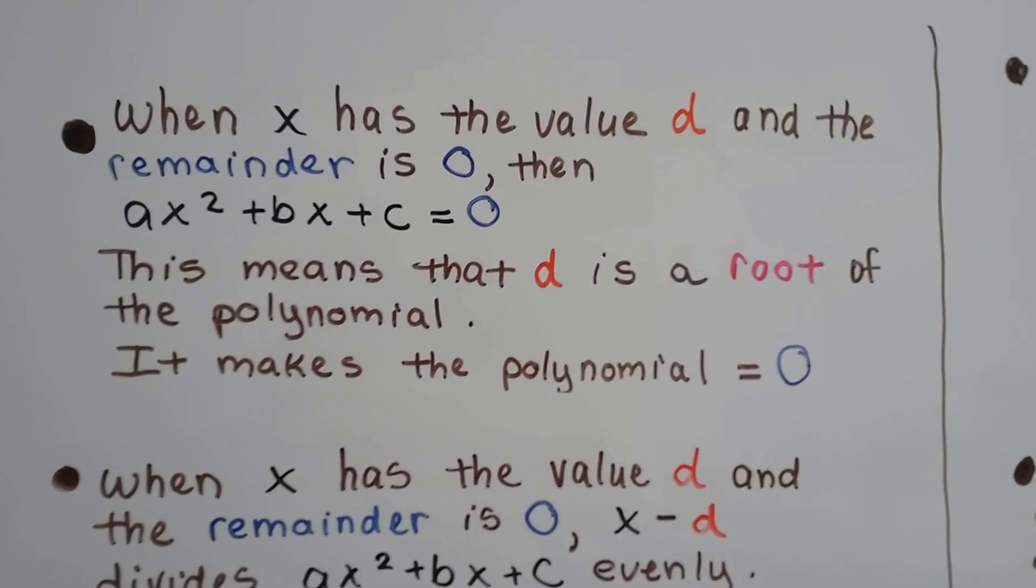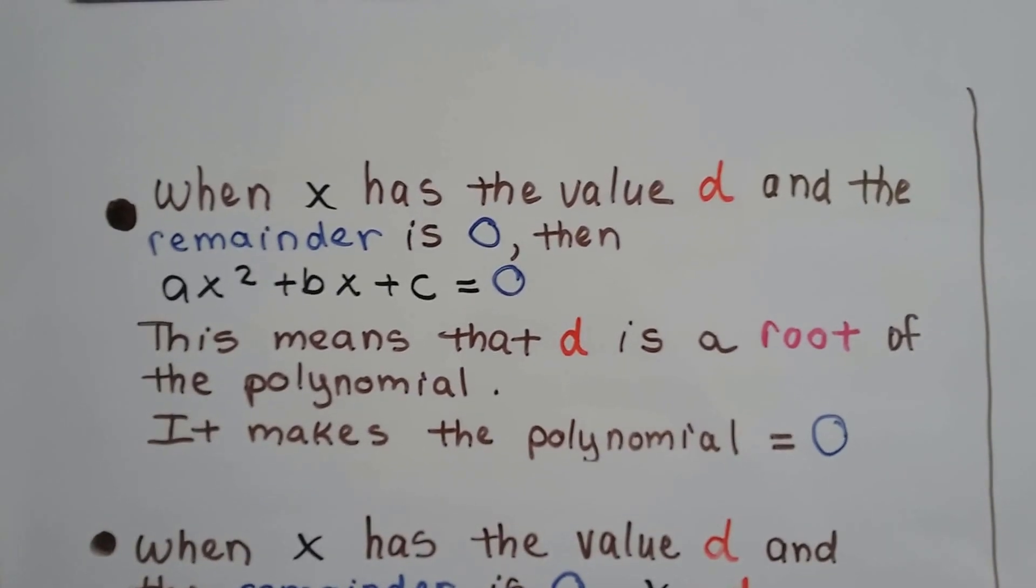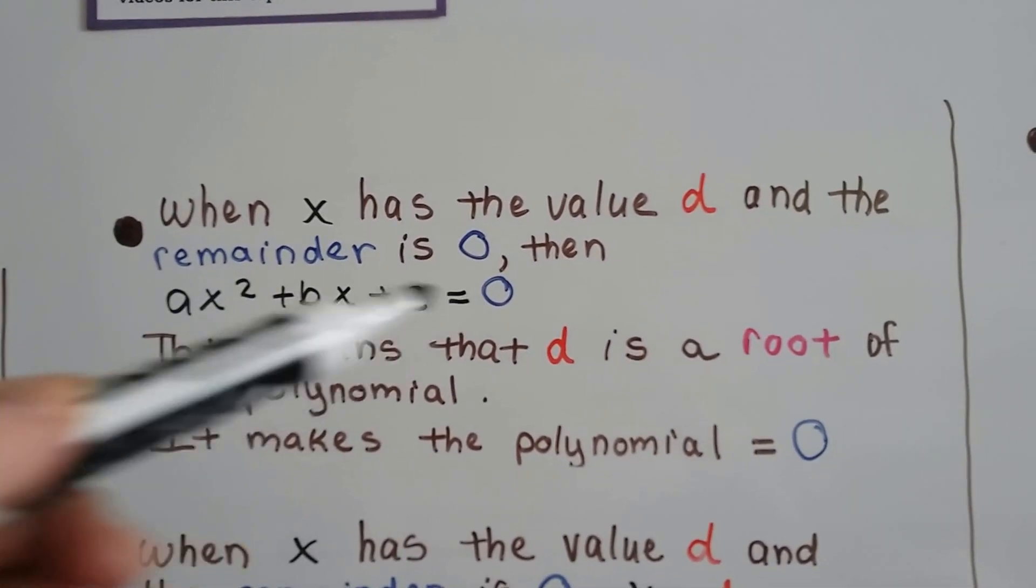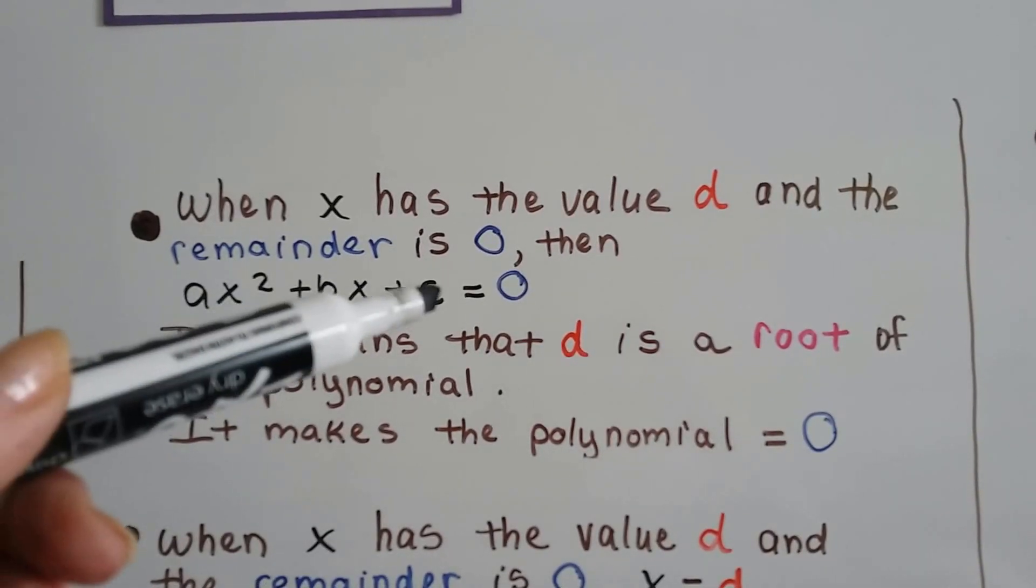So stick with me. When x has the value d, some value, some number, and the remainder is equal to zero, then the polynomial is going to equal zero. It means that d is the root of the polynomial. It made it equal zero.